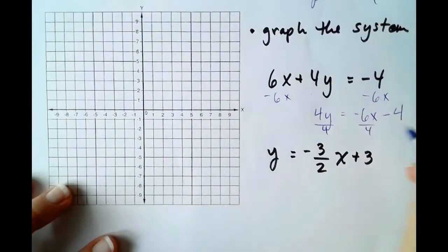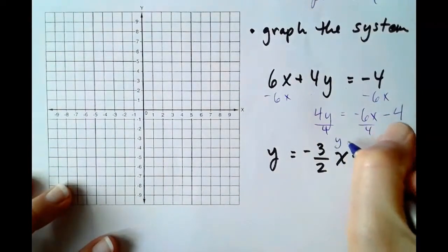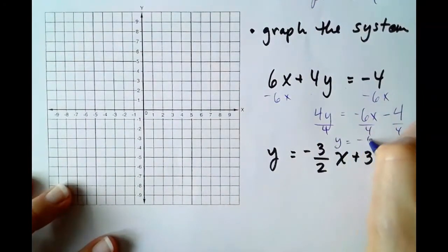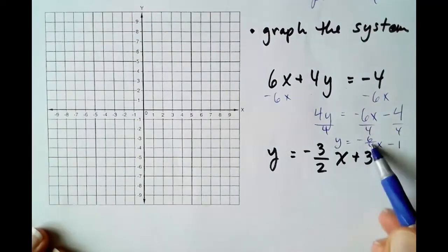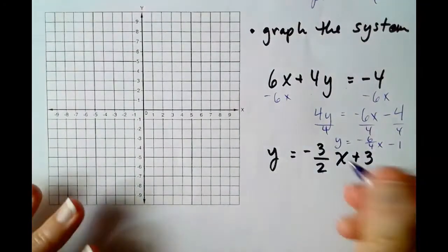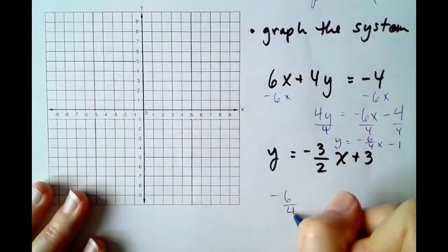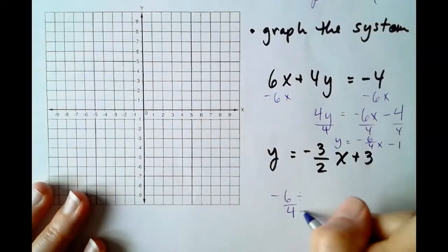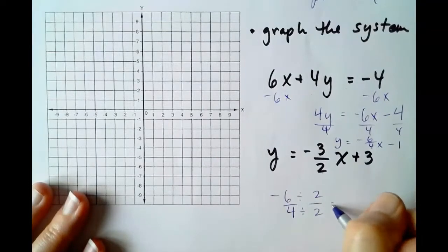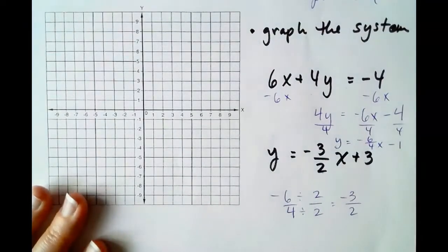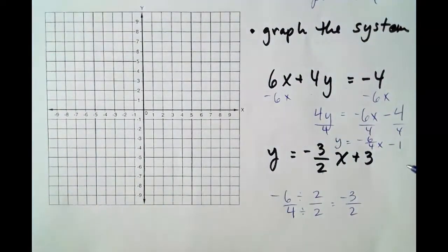Divide by 4, divide by 4, divide by 4. We get y equals negative 6 over 4x minus 1. So do they have the same slope? They actually do because if we take the slope negative 6 fourths and reduce it by 2 over 2, we're going to end up with negative 3 halves. So we are going to have parallel lines here.